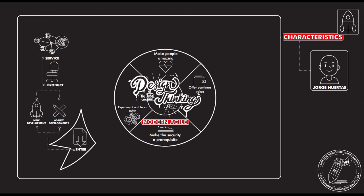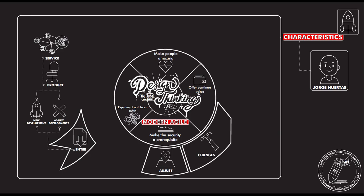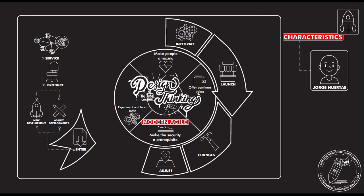The first step is to decide what you are going to do — are you making a new product, a new service, or adjusting an existing one? You start making adjustments depending on the kind of process you are undertaking. It's important to integrate all the different components in the process, and you always need to know which are the priorities in the development you are making.